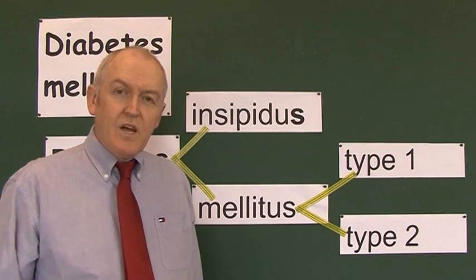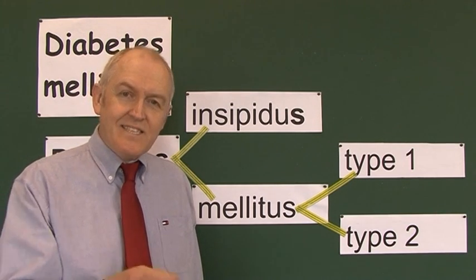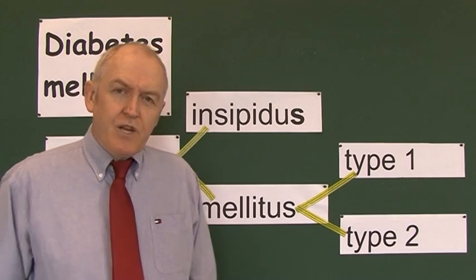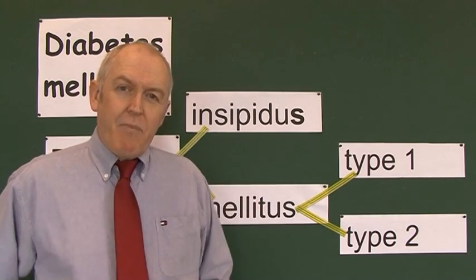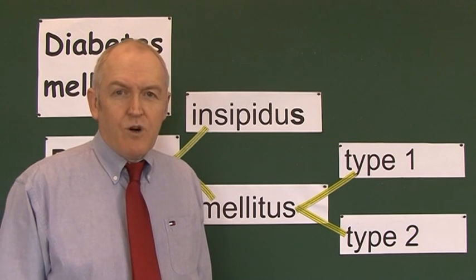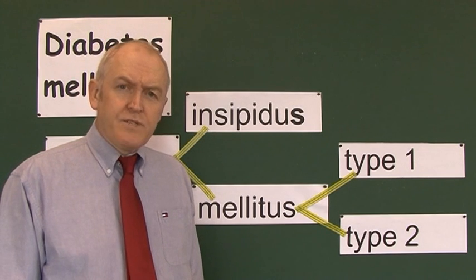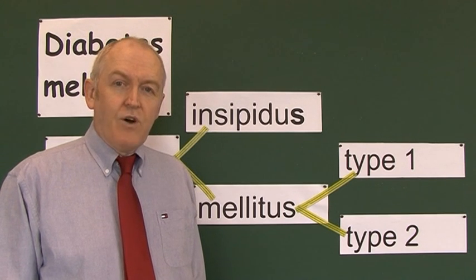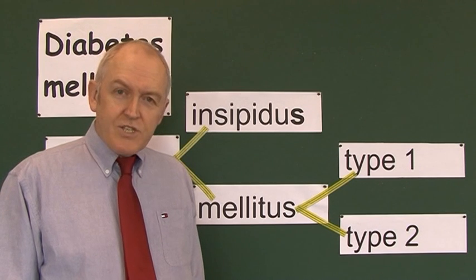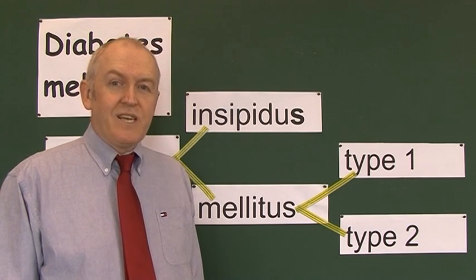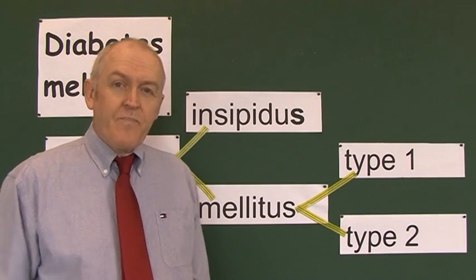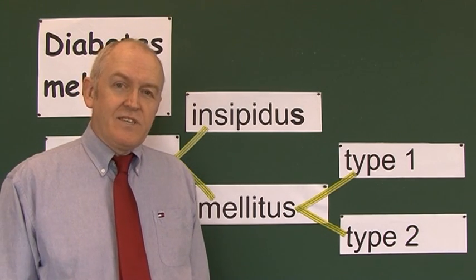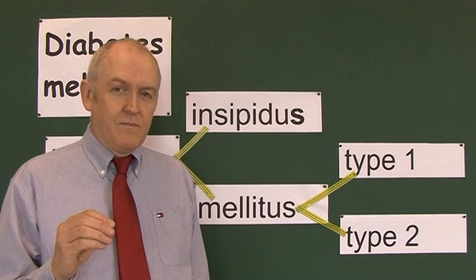ADH reduces urine volumes — the more antidiuretic hormone present, the lower the urine volumes will be. It does this by increasing tubular reabsorption from the nephrons back into the blood, thereby lowering the amount of filtrate in the nephrons and reducing urine output. In the cranial type, the posterior lobe of the pituitary gland does not produce enough ADH, so there is no anti-diuretic effect and excess diuresis results.